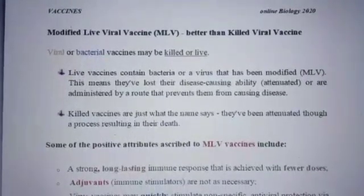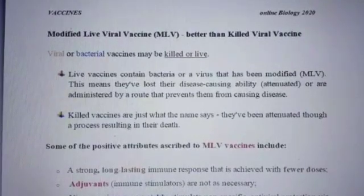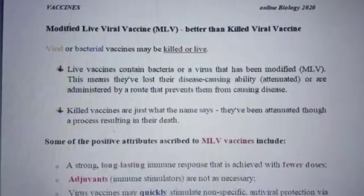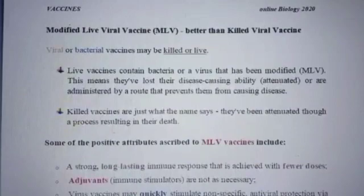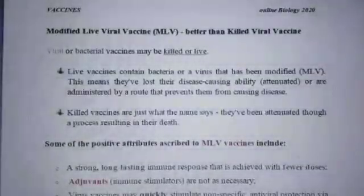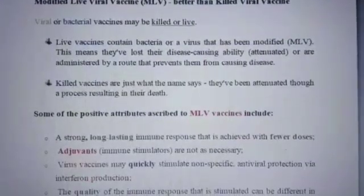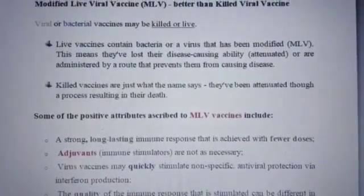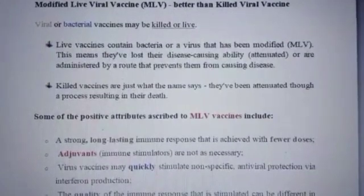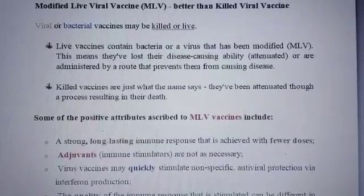In killed vaccines, the viral or bacterial particle is killed, as suggested by the name. Their attenuation process results in the complete decay of the particle. So in short, a live vaccine or MLV contains a live bacterial or viral particle, whereas the killed vaccine contains a viral or bacterial particle that is completely killed or decayed.